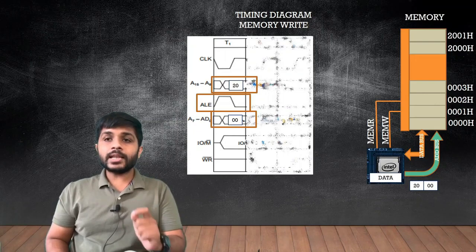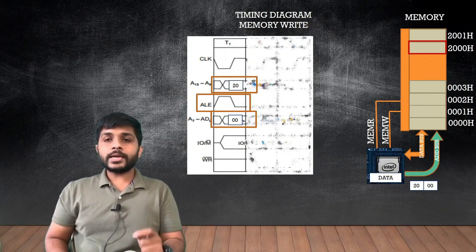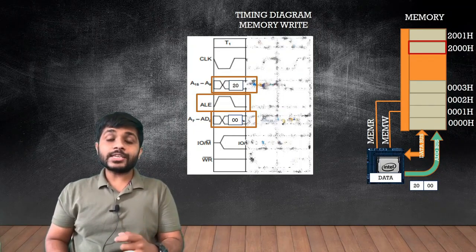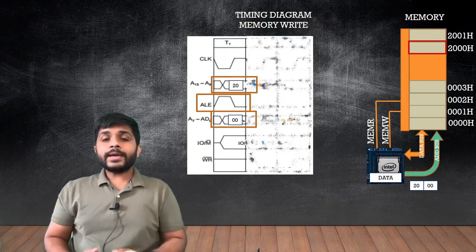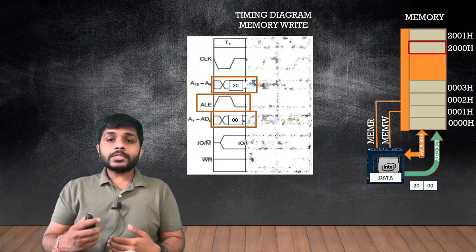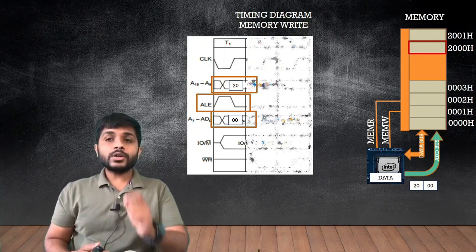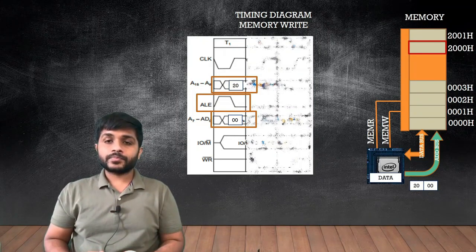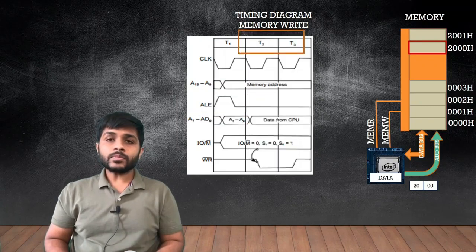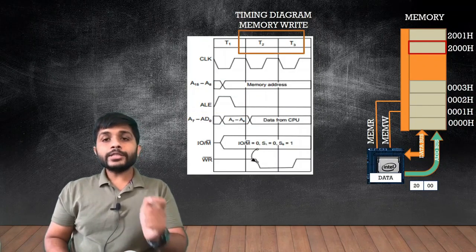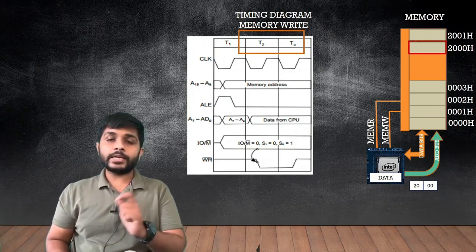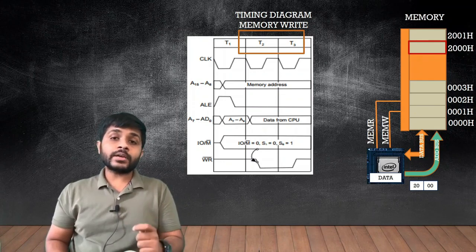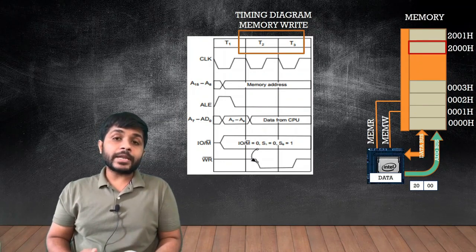Memory will select that address. You can see that address 2000h is selected. Now that the particular address is selected, the processor has to write some data to that selected address. You can see that the next two T-states for the memory write machine cycle timing diagram are T2 and T3. To write the data, the processor has to generate the control signal which is memory write.